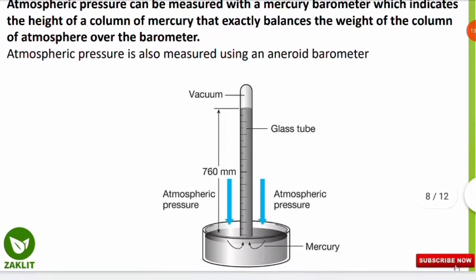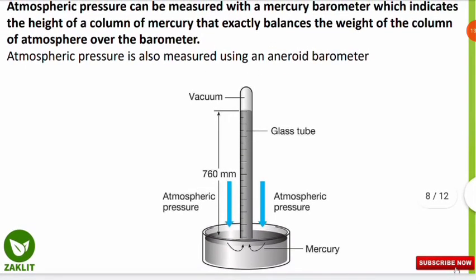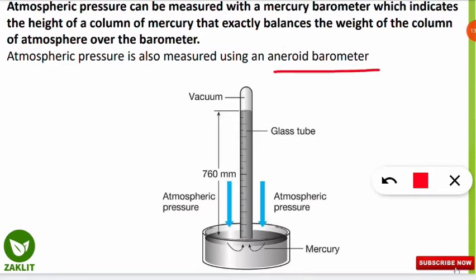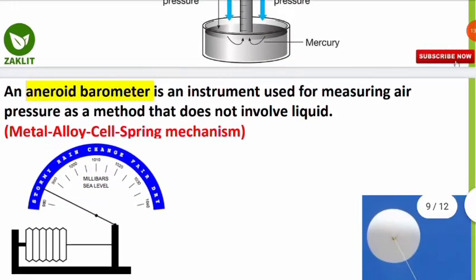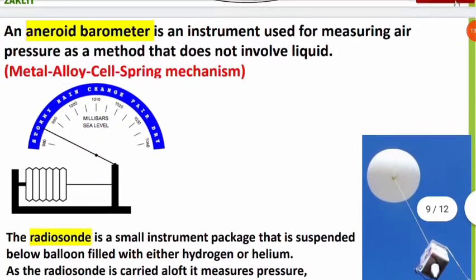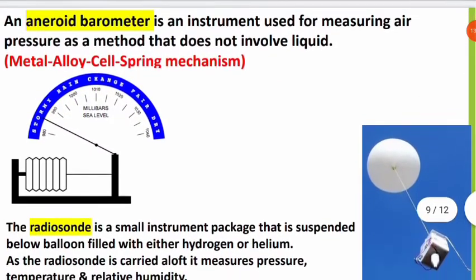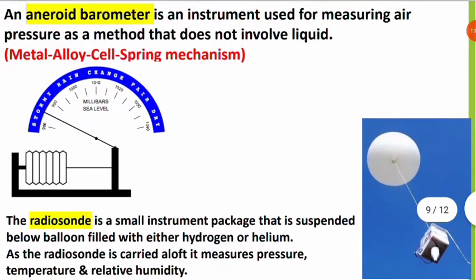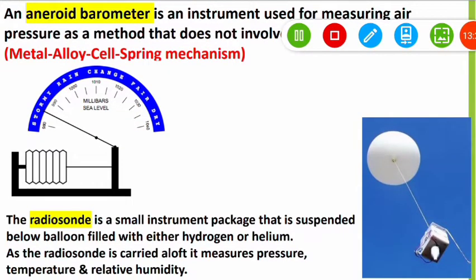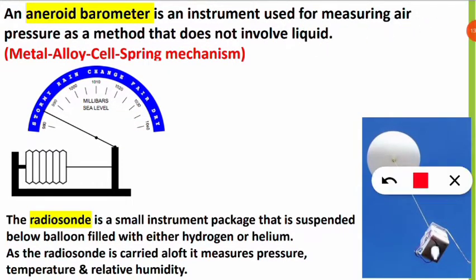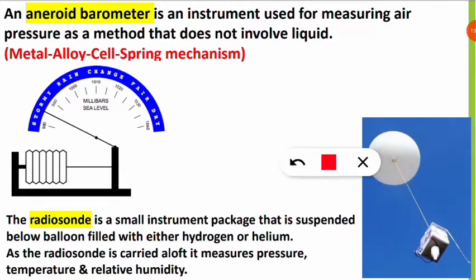The aneroid barometer is slightly different from the mercury barometer. Unlike the mercury barometer, the aneroid barometer does not involve any liquid.